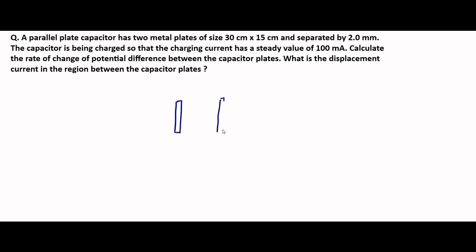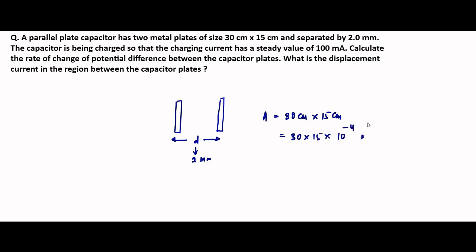Let us draw the basic diagram. There is a parallel plate capacitor with a separation distance of 2 mm and area 30 cm × 15 cm, which is 30 × 15 × 10⁻⁴ m². This capacitor is charged with a charging current — which is the conduction current because it is outside the capacitor — having a steady value of 100 milliampere. We need to determine the rate of change of voltage or potential difference between the plates.